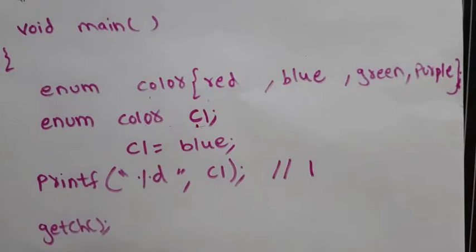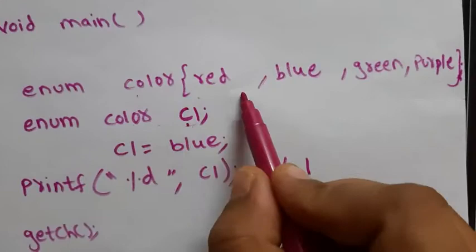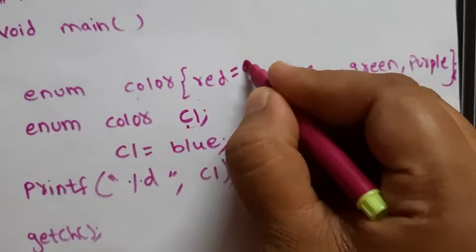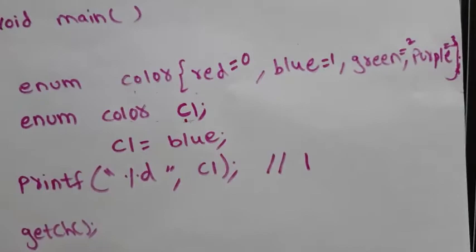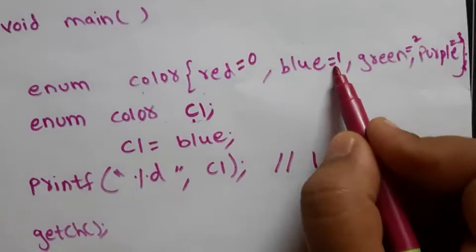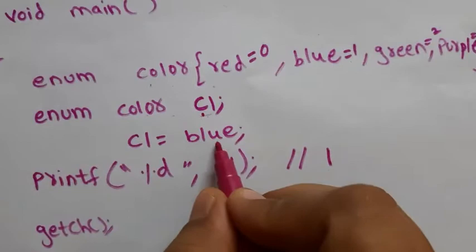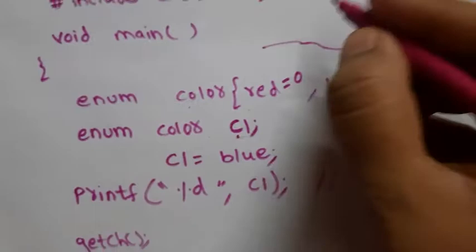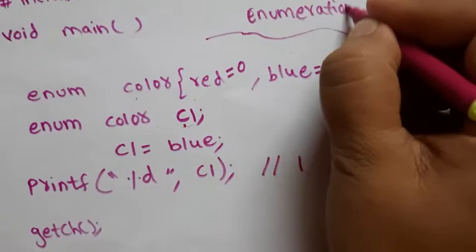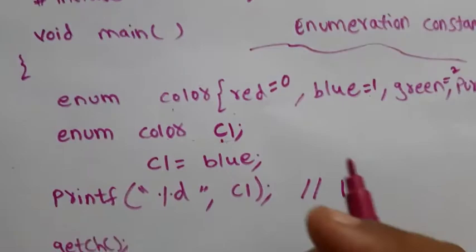The output will be 1. Here's why: when you write enum with values red, blue, green like this, the compiler automatically assigns integers starting from zero. Red becomes 0, blue becomes 1, green becomes 2, purple becomes 3. So blue carries the value 1. Important: you must write the enumeration constant name blue — not the number 1. You can only use the constants listed.